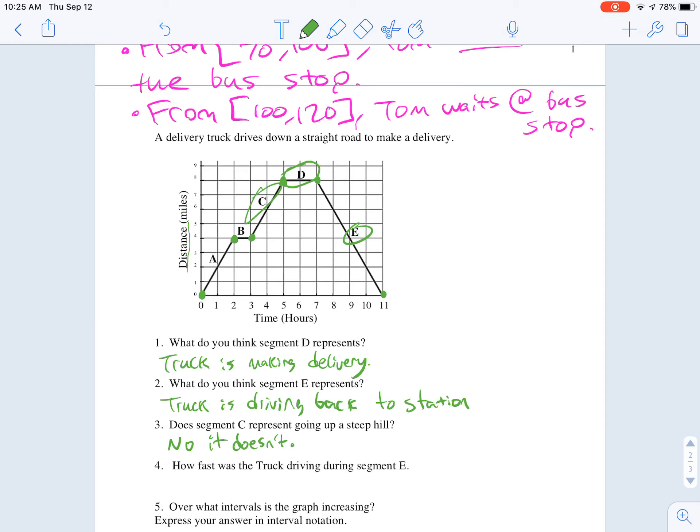How fast was the truck driving during segment E? For speed, we typically say like miles per hour. Segment E goes from seven to 11 hours. So that means that he's going four hours worth of driving. And in that time, he went from eight miles away from home down to zero miles away from home. So he is driving eight miles in four hours. He is not moving fast. This must be like a ice truck driver in Alaska, making a very difficult delivery because he is not moving fast at all. Eight miles in four hours, which you could say is two miles per hour.